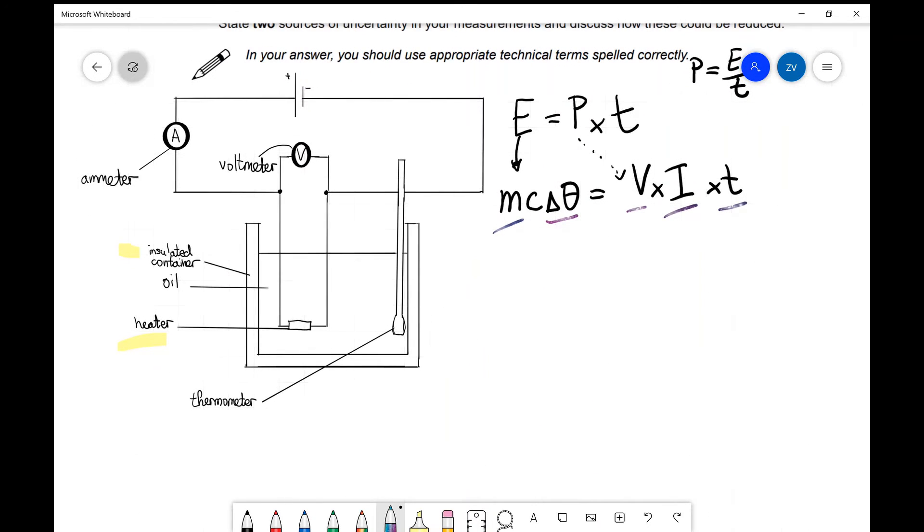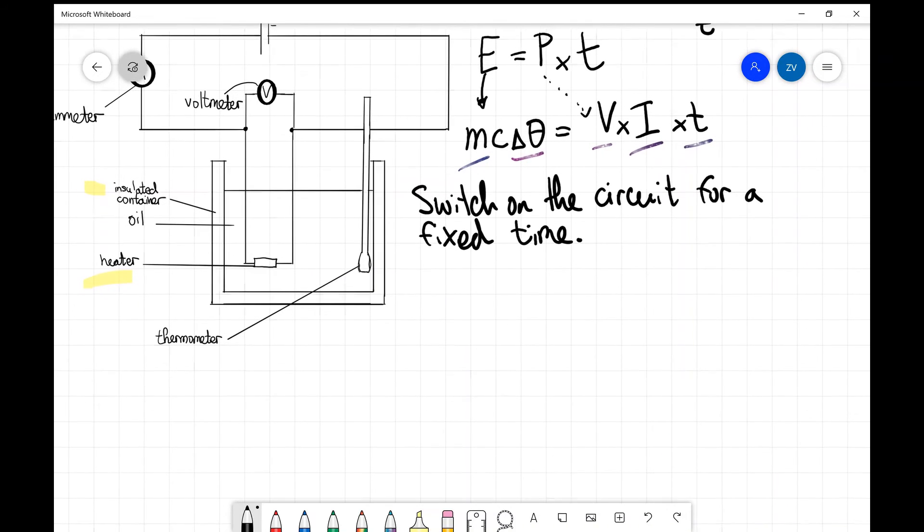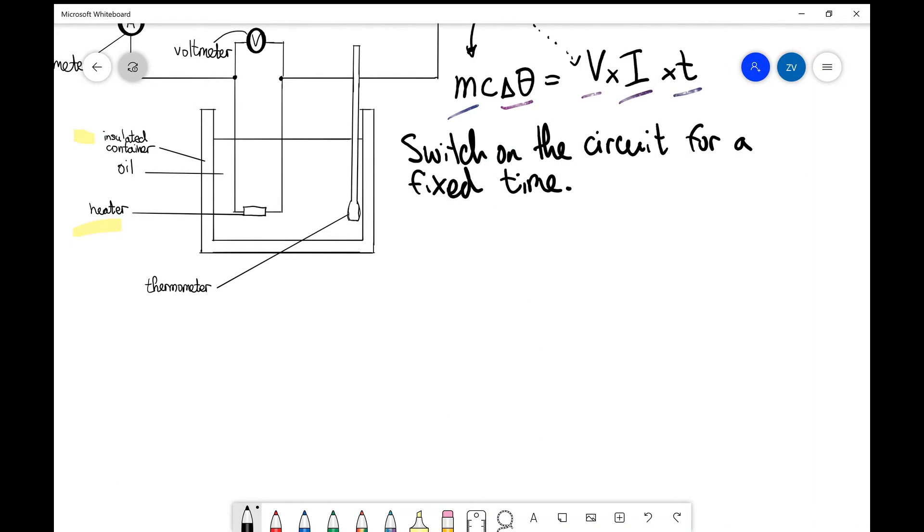Let's start with the description of this experiment. The first thing we'll need to do is essentially switch on the circuit for a fixed amount of time. So what I'm going to write over here is switch on the circuit for a fixed time. Now the next thing we're going to need is a list of measurements with the actual instrument that we're going to be using to do those measurements. We want to be as concise as possible because we don't want to waste time in an exam situation.